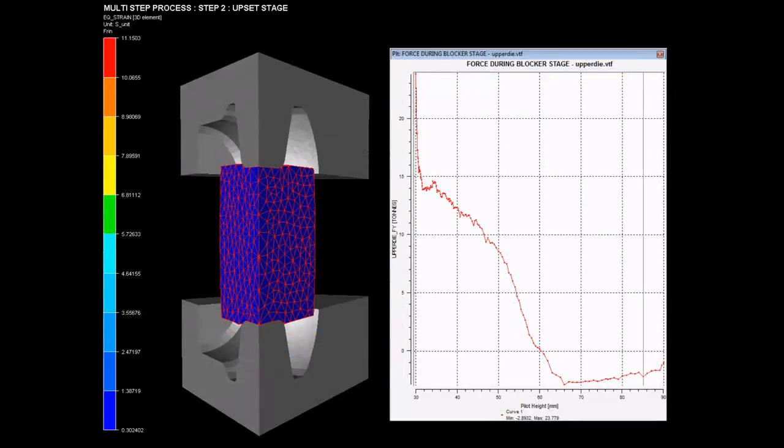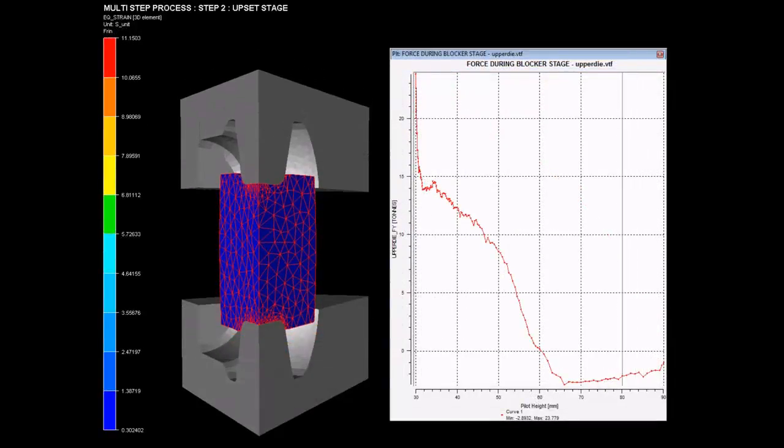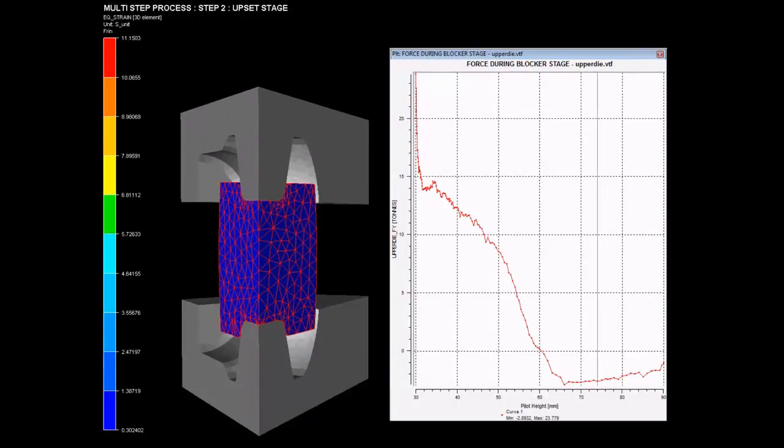The scale on the extreme left hand side describes equivalent strain being generated in the billet.